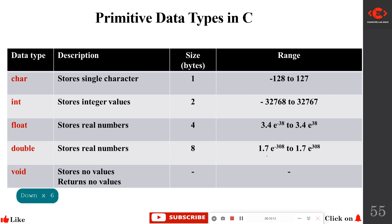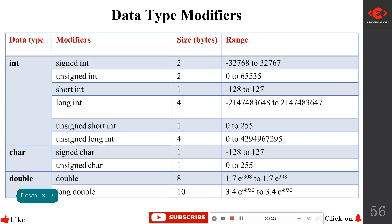Here is a summary of primitive data types: char stores a single character and allocates one byte; int stores integer values and allocates two bytes; float stores real numbers (floating point) and allocates four bytes; double also stores real numbers but allocates eight bytes; void does not store any value. A range table is also provided for each data type.